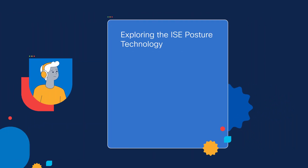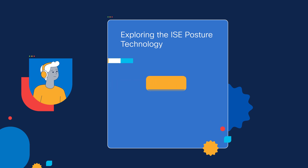As part of the process of evaluating the Cisco ISE posturing technology, we're going to look at three steps. The first step involves us setting up a policy set. This is what governs what access the user gets once we see that he is complying with the policy or not complying with the policy when we configure the posturing technology.